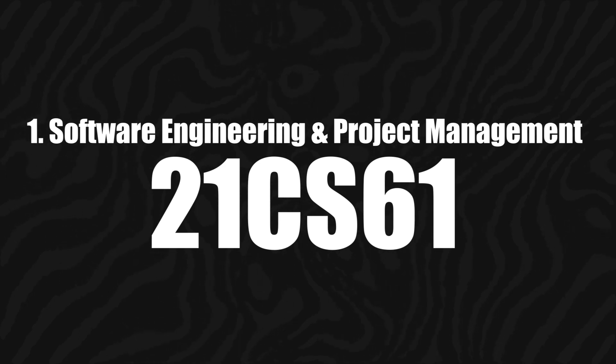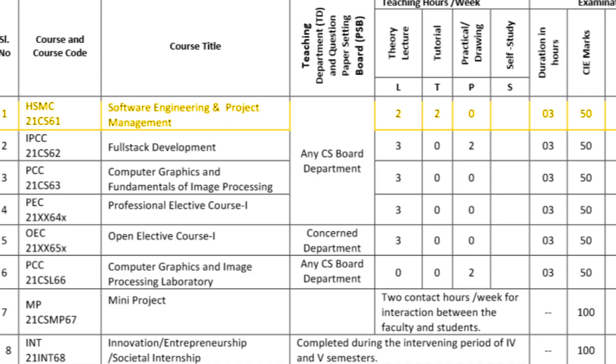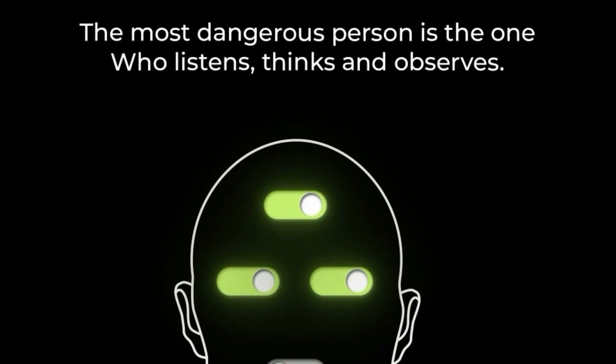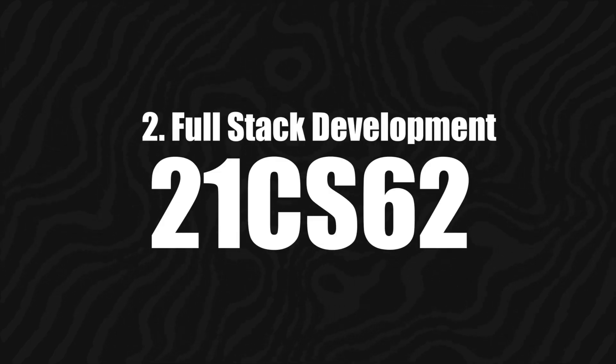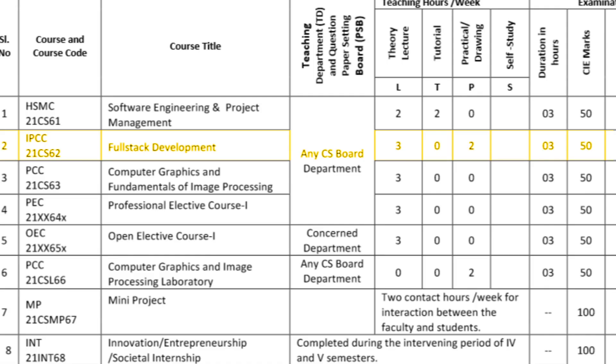The first course in sixth semester is Software Engineering and Project Management. Its course code is 21CS61, credits are 3, and marks are 100. This course introduces students to the principles and methodologies of software engineering and project management. It covers the software development life cycle, requirement gathering, design patterns, testing techniques, quality assurance, and project planning and control.